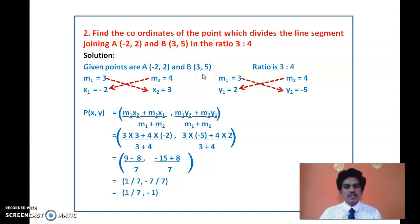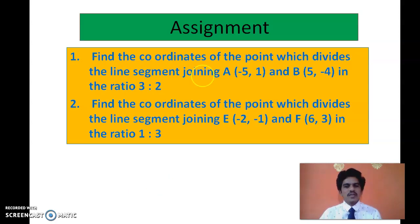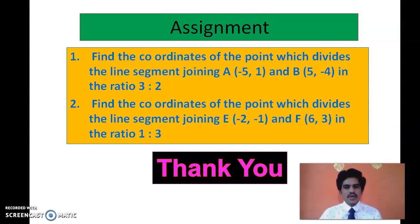So whenever you have two points and a given ratio in which a line segment is divided, this is how you solve the problem. We have another kind of application which we will discuss in Part 10 of Coordinate Geometry. As an assignment, find the coordinates of the point dividing the given line segments in the ratios 3:2 and 1:3. Practice these calculations and submit your assignment. Thank you.